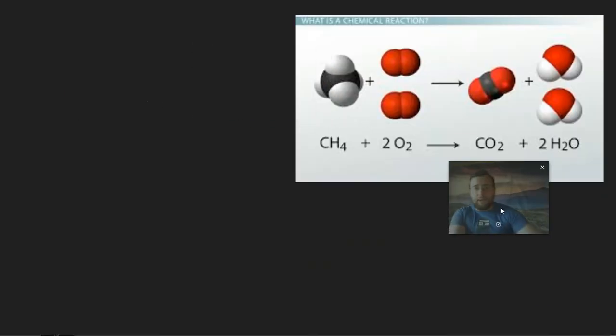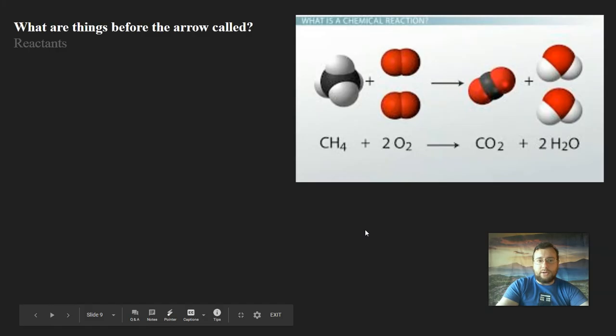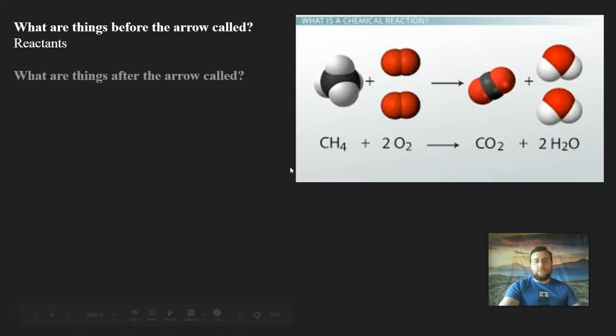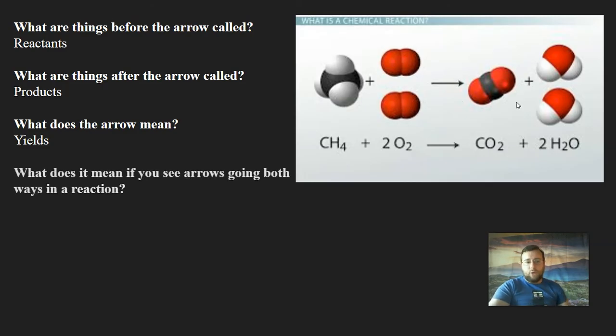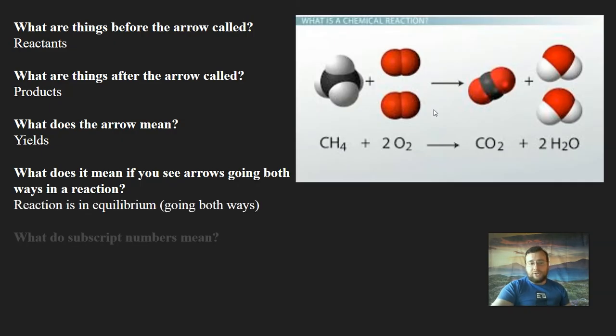Now, the second objective talks about the parts of a chemical reaction equation. The arrow means that you're going from one place to another, and basically means yields. So you're going to start from one and make the others. The things before the arrow are called reactants. The things after are called products. Now, usually you're going to see what is going from left to right, but it doesn't have to be that way. In fact, sometimes you have reactions that have arrows going both ways, and that just means the reaction is in equilibrium.